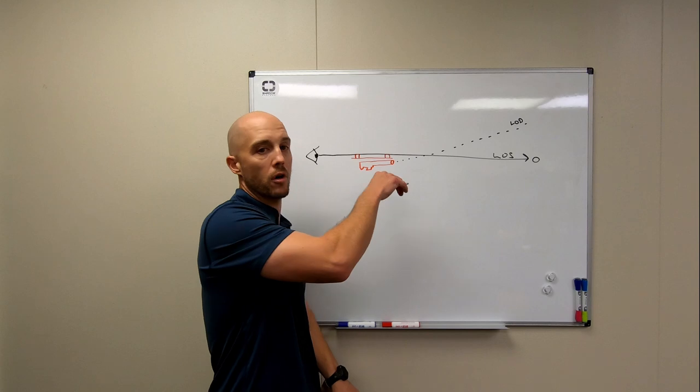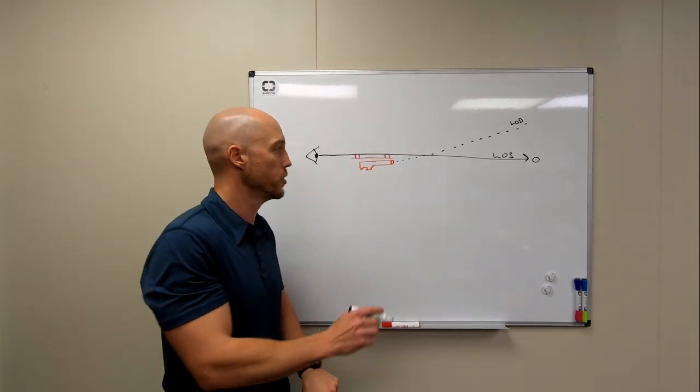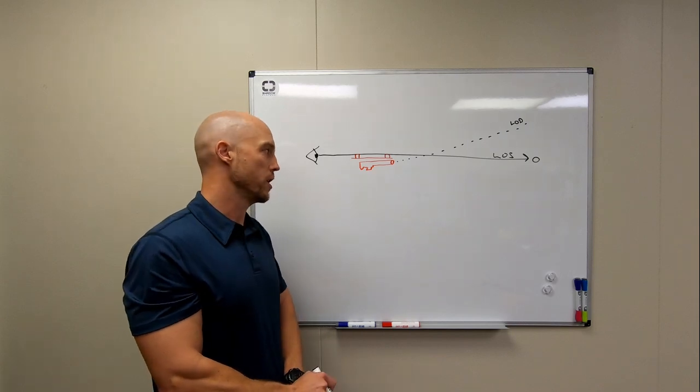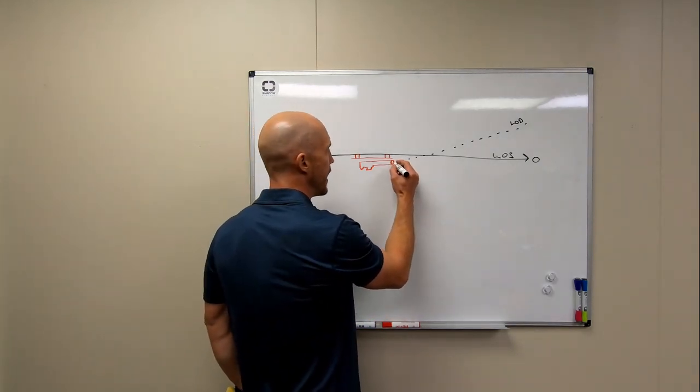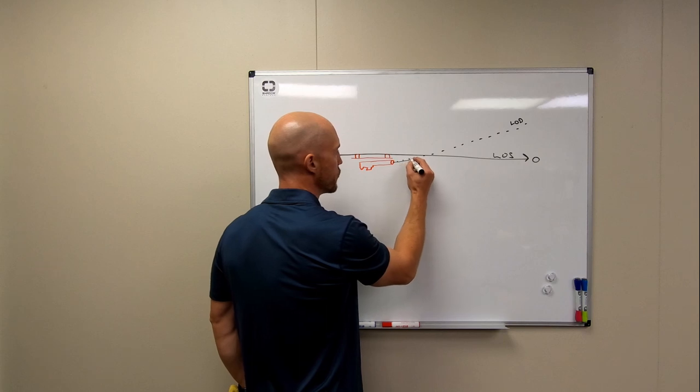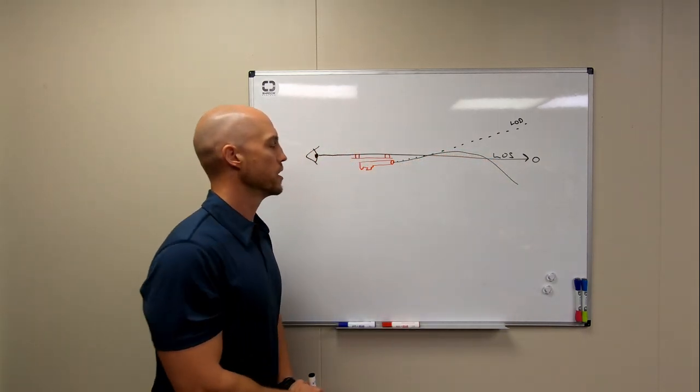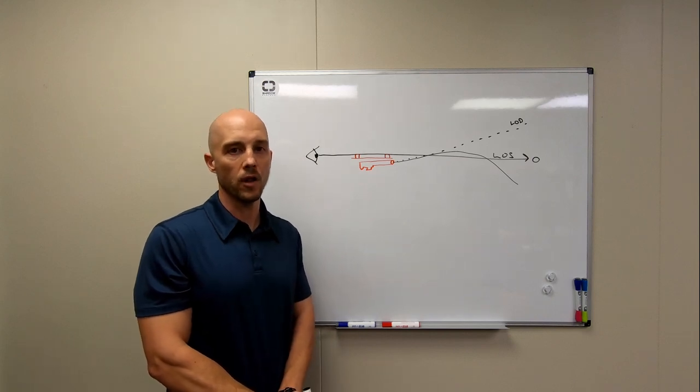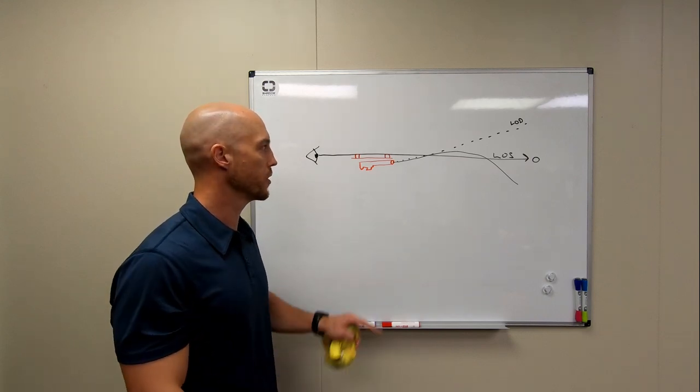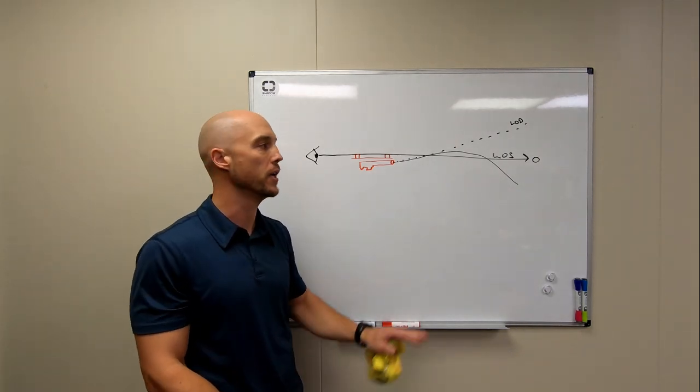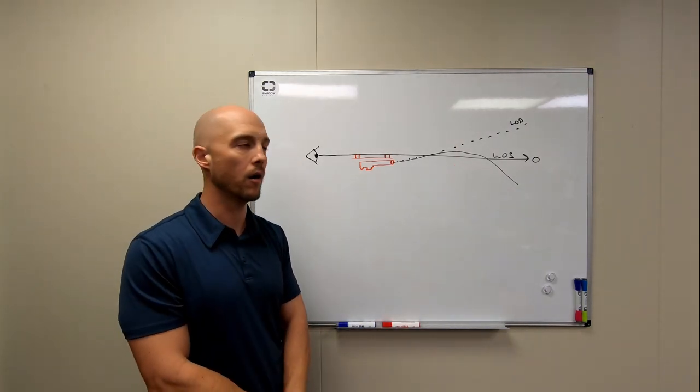And from the barrel extends an imaginary line that is also perfectly straight that is called the line of departure. So it is obviously impossible for the bullet to fly in a perfectly straight line forever. It starts falling as soon as it leaves the muzzle. So the line of departure really defines the angle at which the projectile departs from the barrel, but we know that the bullet starts falling immediately. As soon as it leaves the muzzle, it is getting pulled toward the earth. So that defines then the trajectory, which is this parabolic track that the bullet follows as it flies through the air.